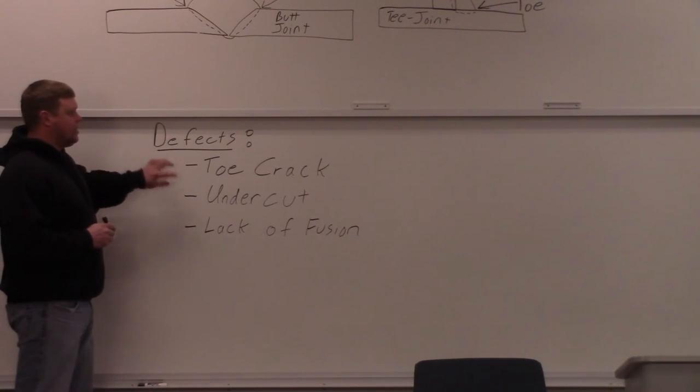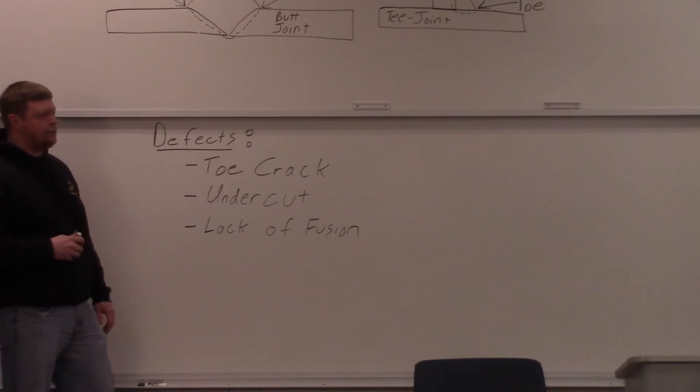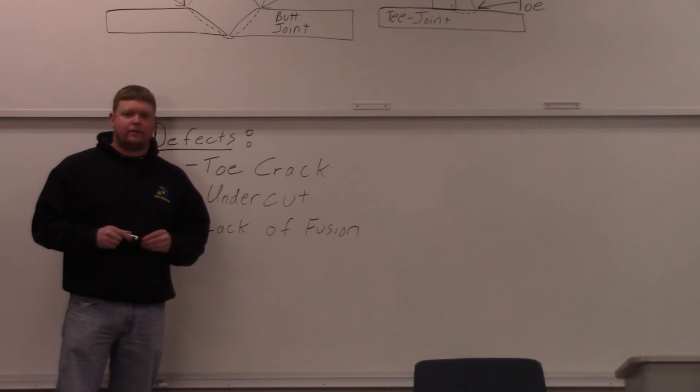The cause: transverse shrinking stresses. Indicates the heat affected zone has a brittleness problem. Prevention: increase preheat if possible, and use a more ductile filler metal.